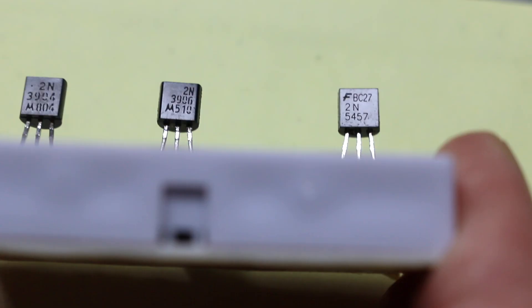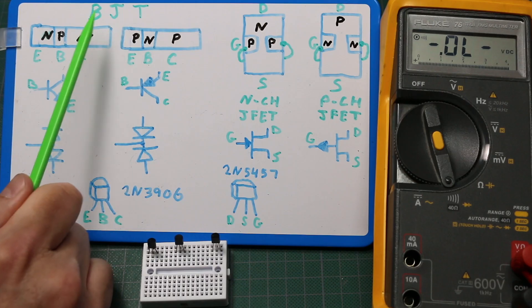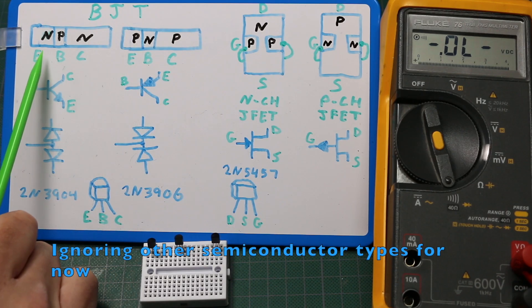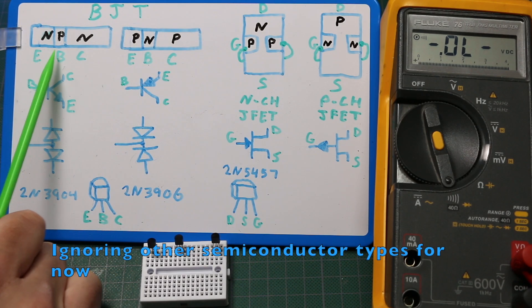From left to right I have an NPN 2N3904, a PNP 2N3906, and an N-channel JFET 2N5457. Bipolar junction transistors are made from alternating layers of N- and P-type silicon.